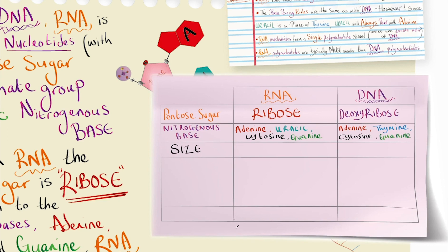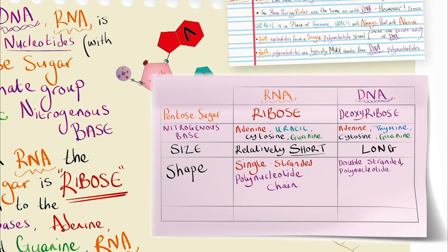The size of these molecules: RNA is relatively short in comparison to DNA, which is long. And the shape of these - RNA is a single-stranded polynucleotide chain, whereas DNA is double-stranded polynucleotide chains twisted into the double helix.